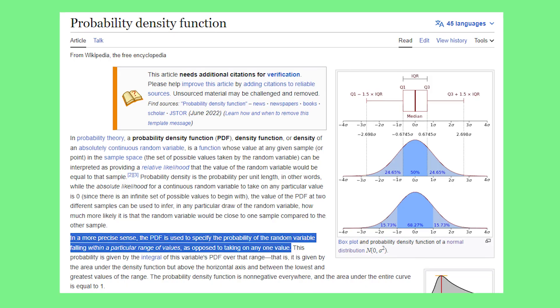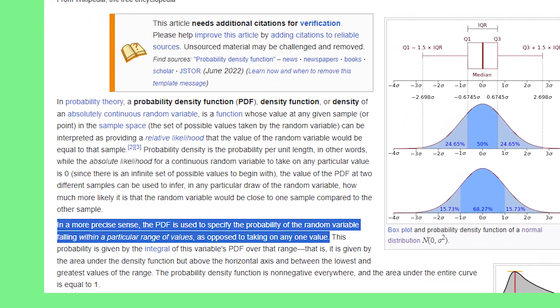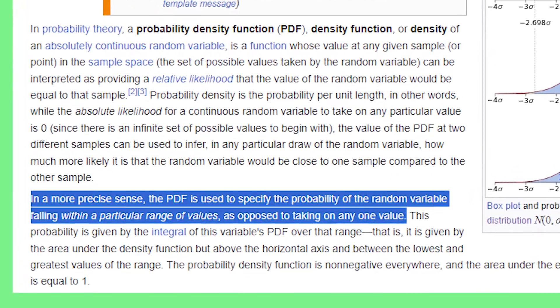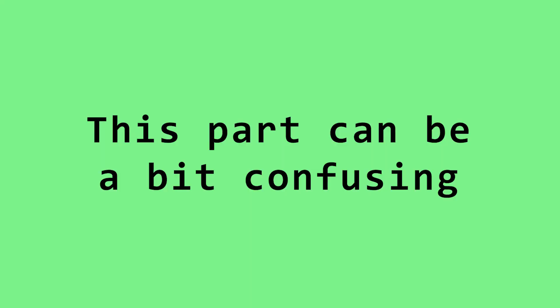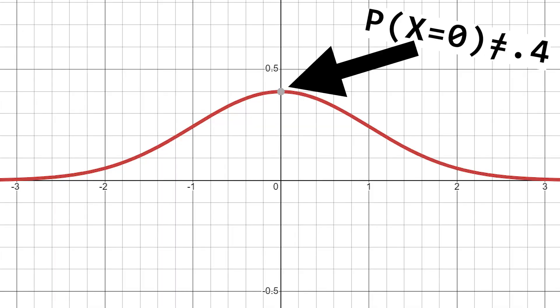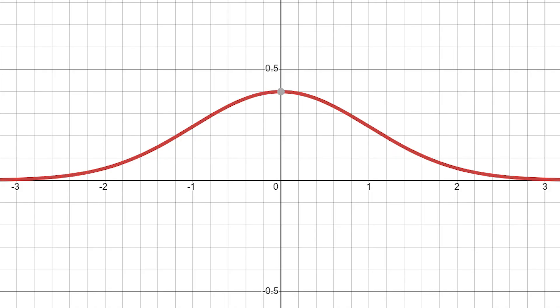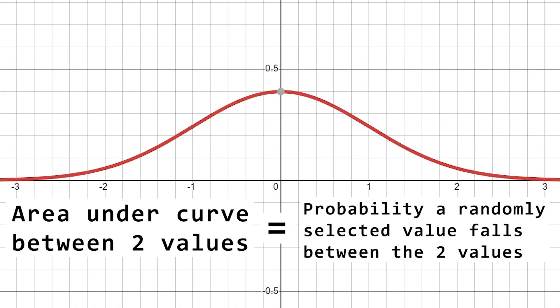So, what's a probability density function? Well, PDFs are functions that tell us the probability that our random variable falls between two values. So, this part can be a bit confusing, so just bear with me. But the height of a PDF doesn't really tell us anything about the probability. What we look for instead is the area underneath the curve.